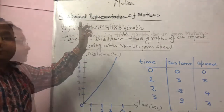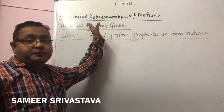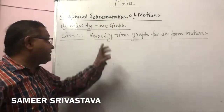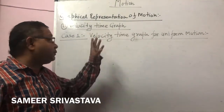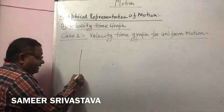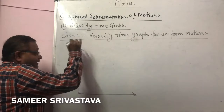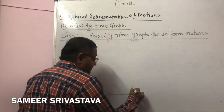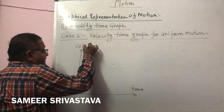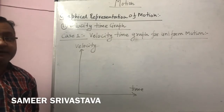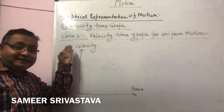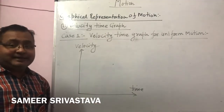Now I am going to the velocity-time graph. Case 2 — I am going to explain how you can make the velocity-time graph. We have to make a graph between two variables: one is velocity and second is time. Always remember, time is shown on the x-axis and velocity always represents along the y-axis.